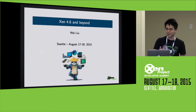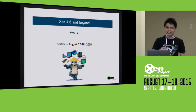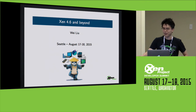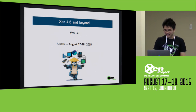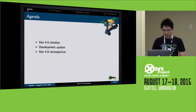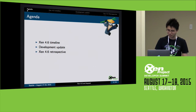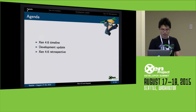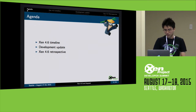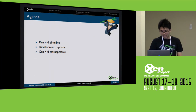My latest trophy is that I contributed a one-liner patch to OpenBSD to fix a sort of trivial bug in the interrupt handler code. So this is the agenda for my talk — I arranged it into three major sections: I'll talk a little bit about the 4.6 timeline, then give you some update on the latest development of various projects, and then a little bit about the Xen 4.6 retrospective.